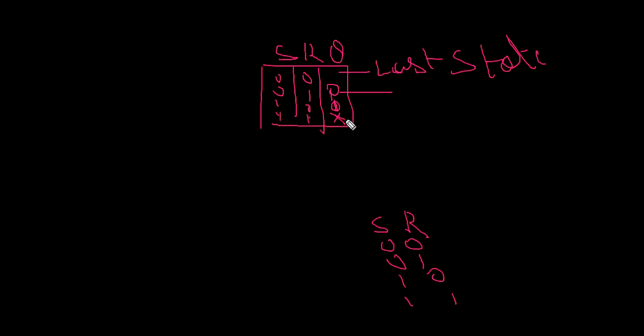When S and R are both 1 and 1, it is called an illegal condition. You cannot predict the output of the flip-flop in this case. This is called an illegal condition or forbidden condition in the SR latch.